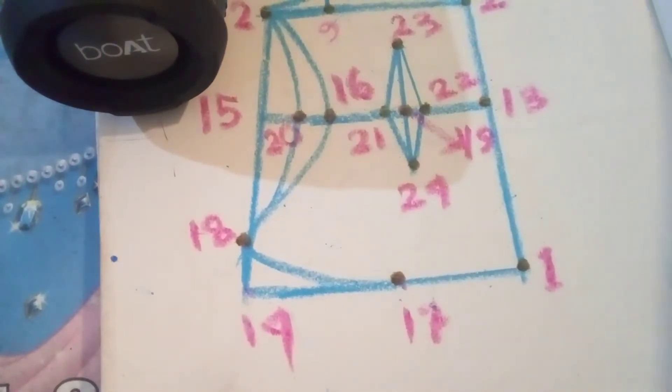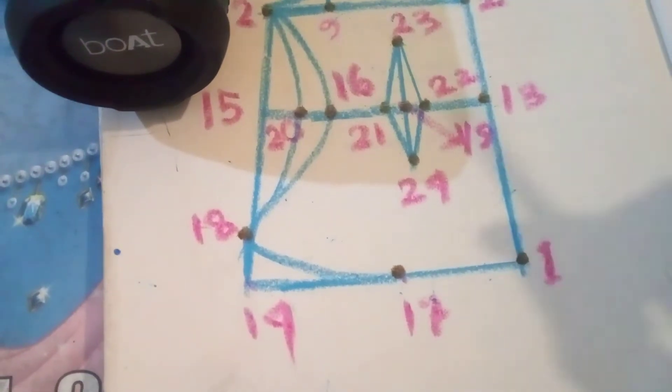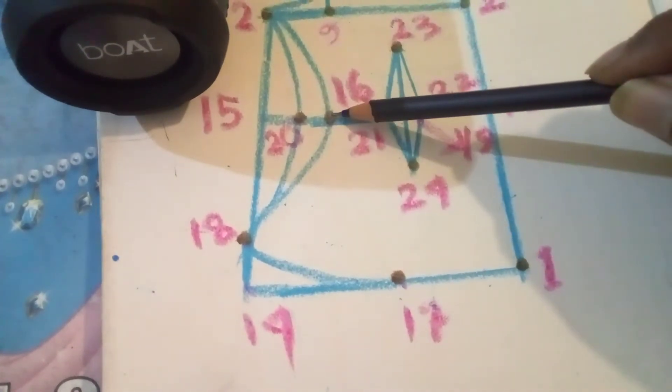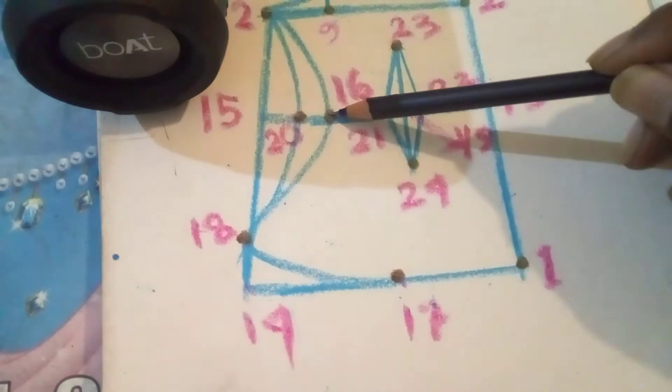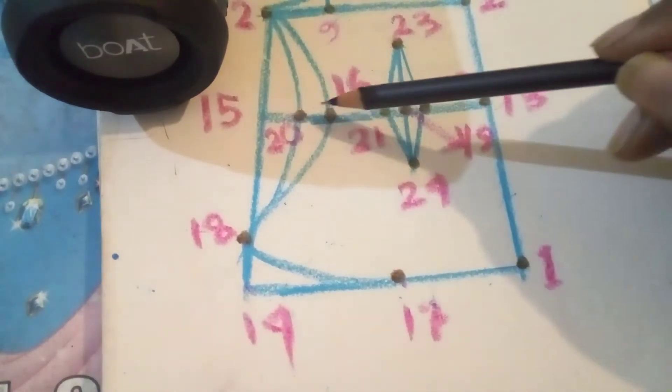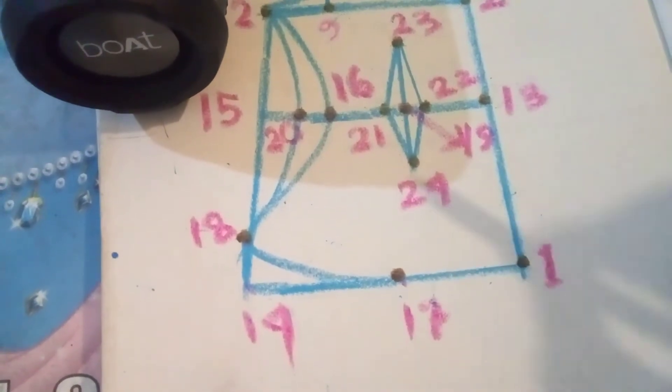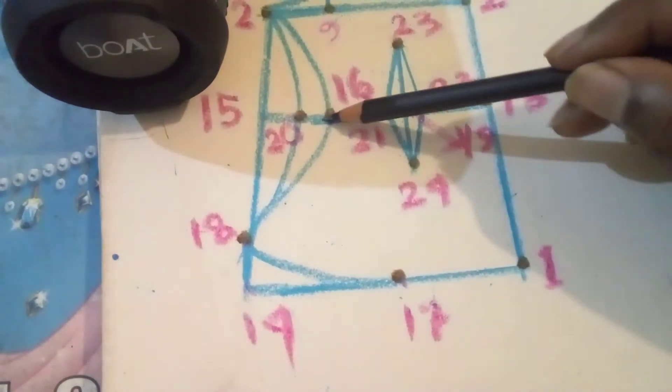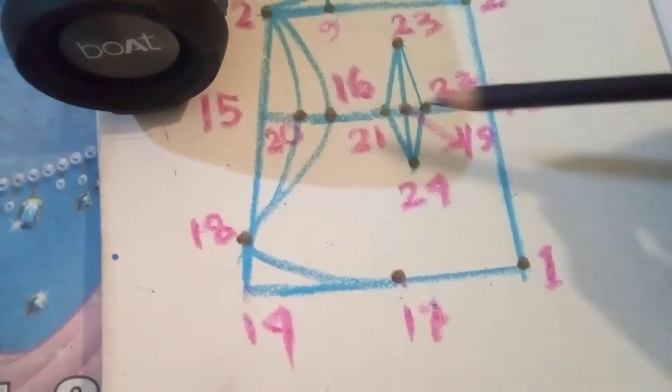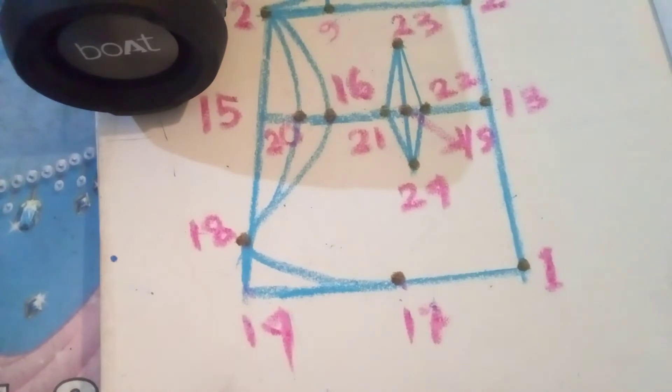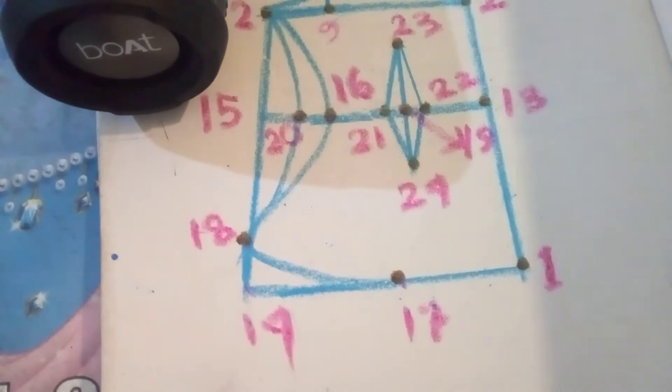Next point, we are going to write down 16 to 20. Measure it. This is 16 and this is 20. I am going to see with measuring tape or scale. Write down 16 to 20, measure it.